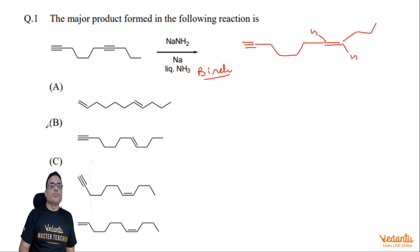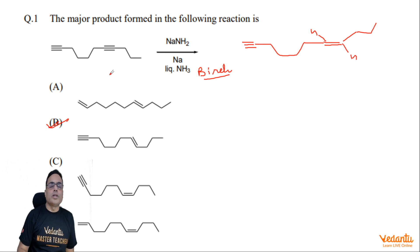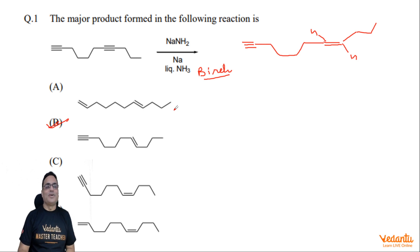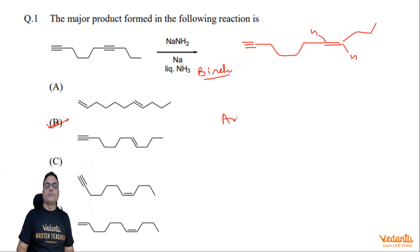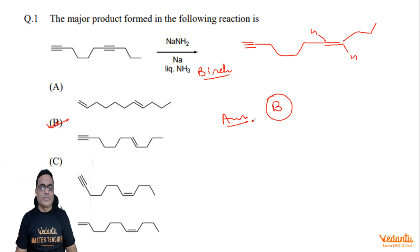So the correct option must be B. Very simple question. Aapko keval non-terminal alkyne ko reduce karke trans-alkene mein convert karna hai. So the answer to this question must be B. Please stay tuned for the next question.